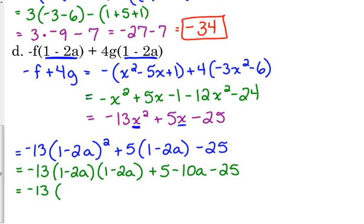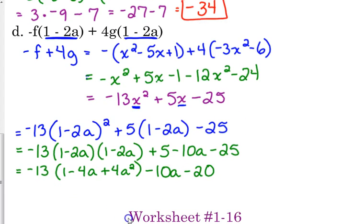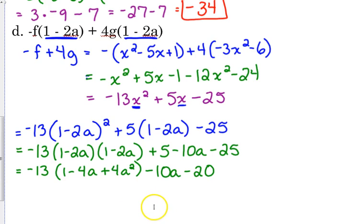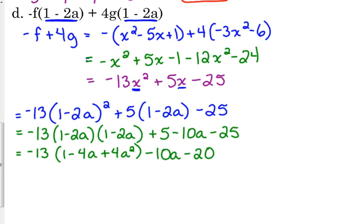I'm going to FOIL 1 minus 2a times 1 minus 2a. So, that's 1 minus 4a plus 4a squared. If you need to do that in two steps, that is fine. I'm just trying to conserve space here. And, at the end, I'm going to start writing it in standard form. So, I'm going to put the minus 10a first. And, I'm going to go ahead and combine the 5 minus 25 to give me negative 20. Two steps left.